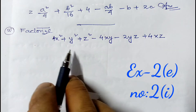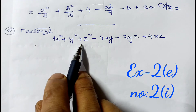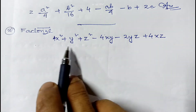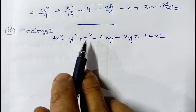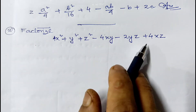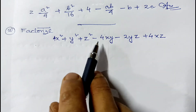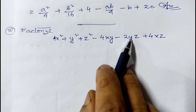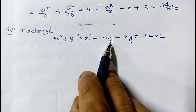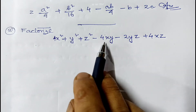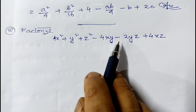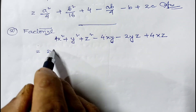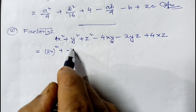Now we have to factorize: 4x² + y² + z² − 4xy − 2yz + 4xz. This expression is of the format x² + y² + z² + 2xy + 2yz + 2zx, but the problem is that two negative signs are there. Notice that xy and yz both involve y and are negative, which indicates that the y term must be negative.